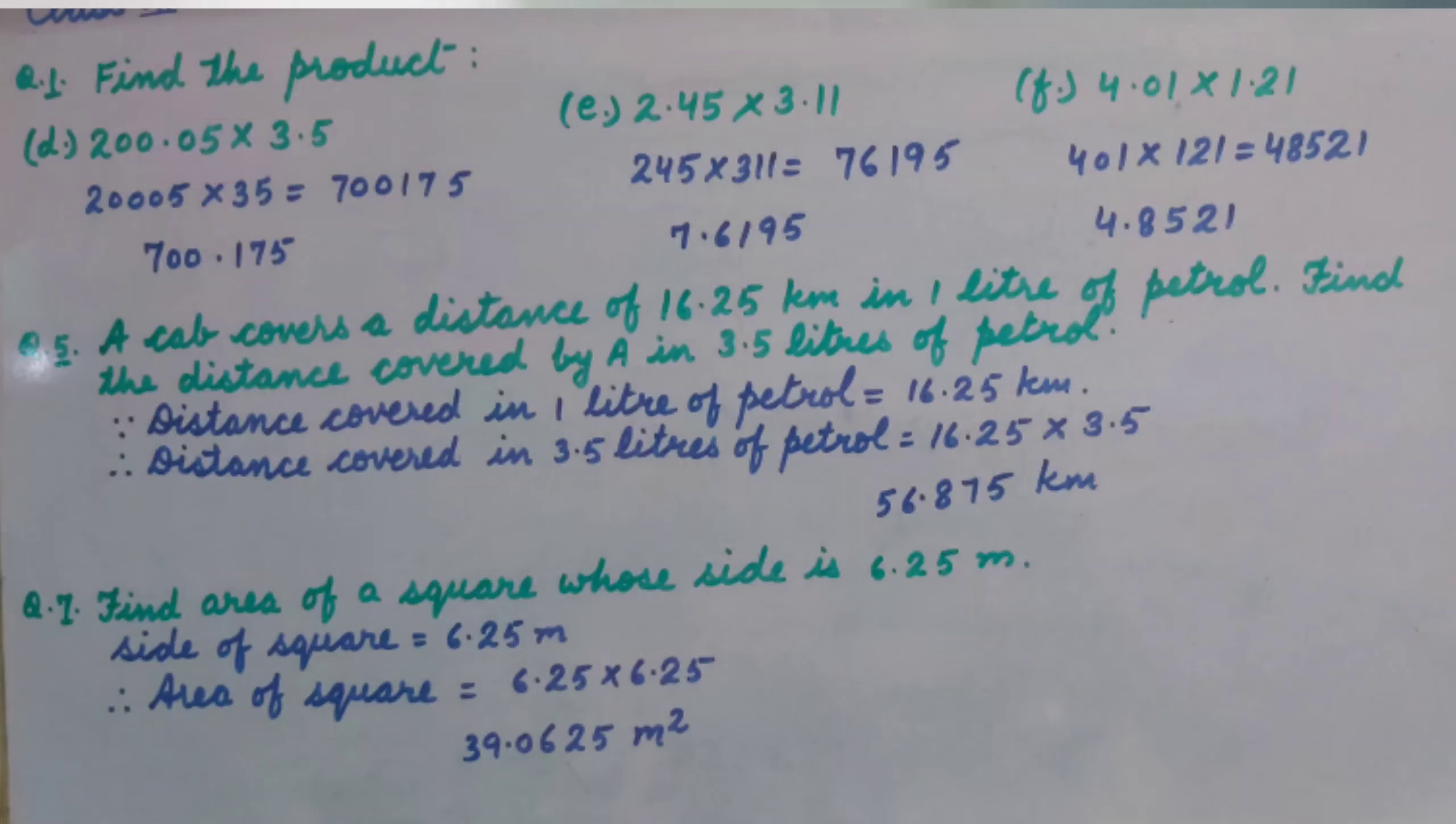As we know, when we find the product, we multiply the whole numbers first. So 20,005 multiplied by 35 is 700,175. Here we have 3 decimal places in the multiplier and multiplicand, so we write the decimal after 3 places from right. The answer is 700.175.